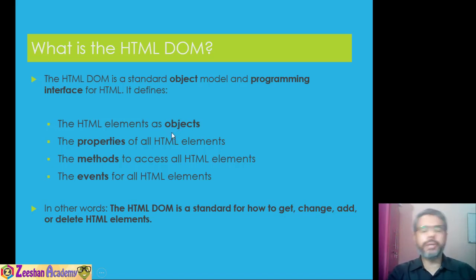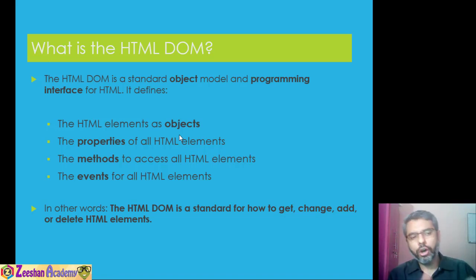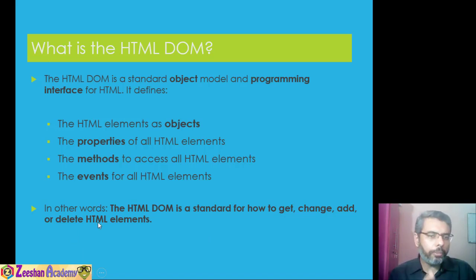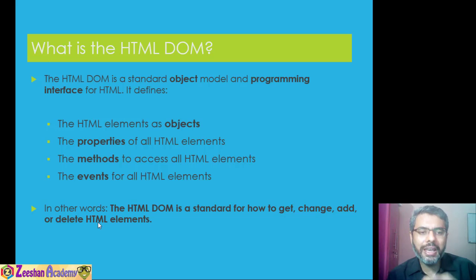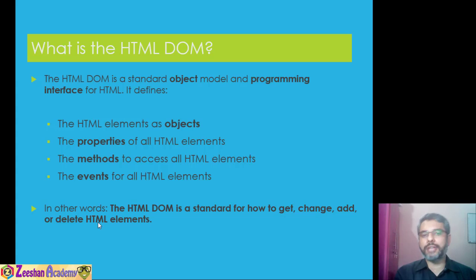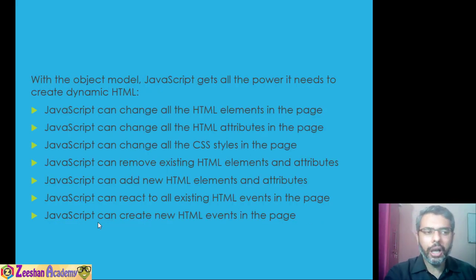An object contains methods which allow us to change the properties of HTML elements. In simple words, the HTML DOM is a standard for how to get, change, add, or delete an HTML element. This model defines a standard or protocol by which you are able to get data from an HTML element, change data of an HTML element, add something to it, or delete that HTML tag.